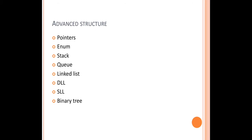Starting from basic structures to advanced structures, all the concepts available in any programming language are called constructs of the programming language, because using those things only we are going to construct a program. Even a simple program uses at least two or three constructs to define the code and to execute it. Though this may seem like a less important topic in Unit 1, sometimes university question patterns give importance to this topic.